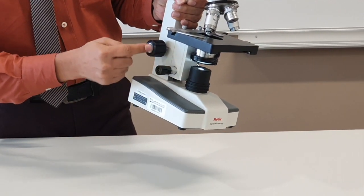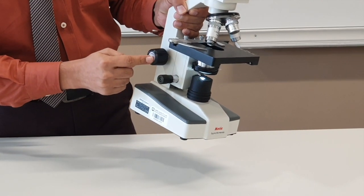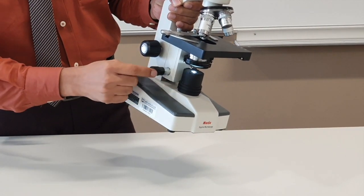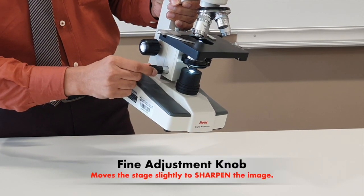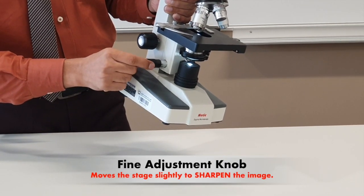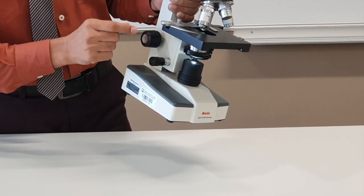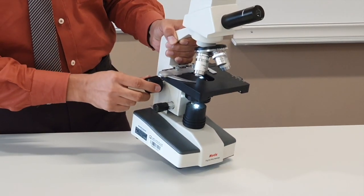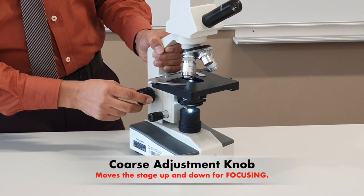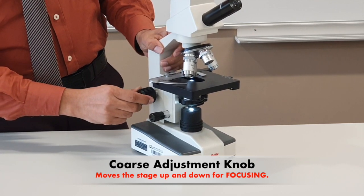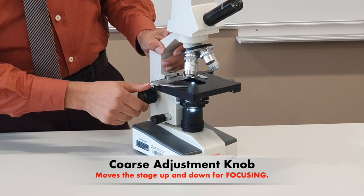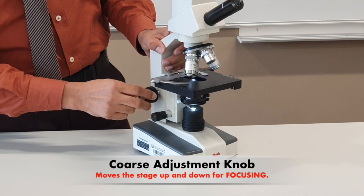You have these two knobs, which are very important for the clarity of the image. The lower one is called fine adjustment. This adjustment is to sharpen the image quality. The other one, the bigger one, is called coarse adjustment. Coarse adjustment is used to move the stage up and down to bring the slide closer to or away from the lens.